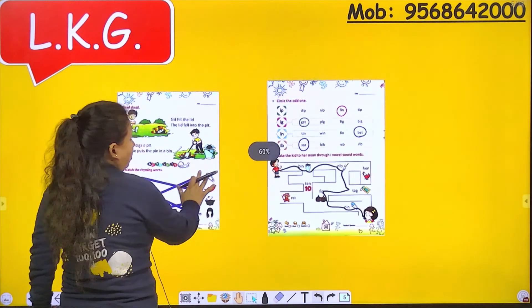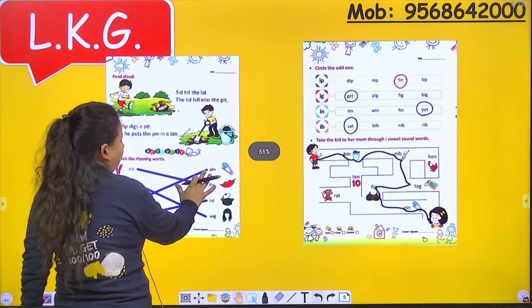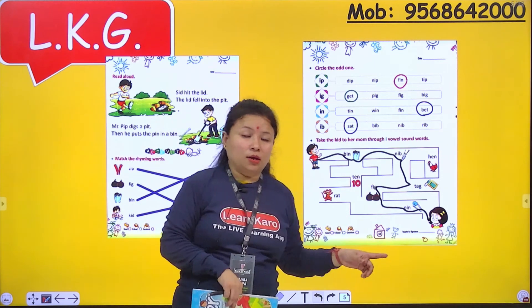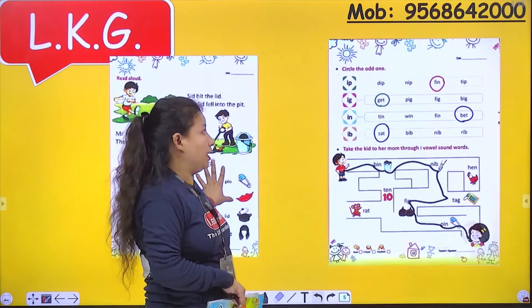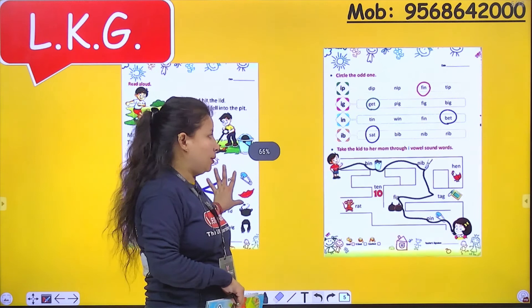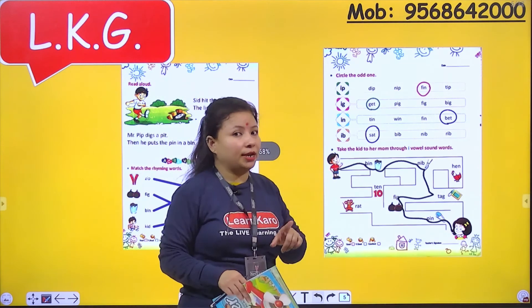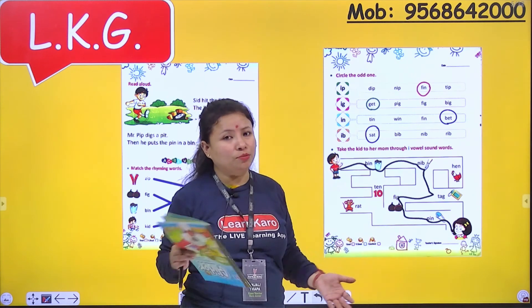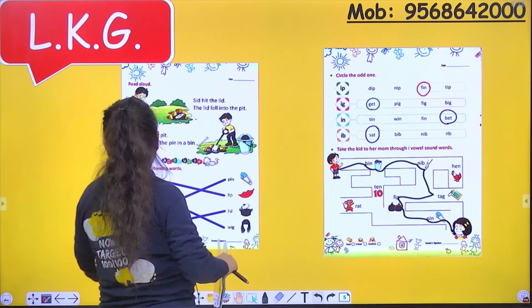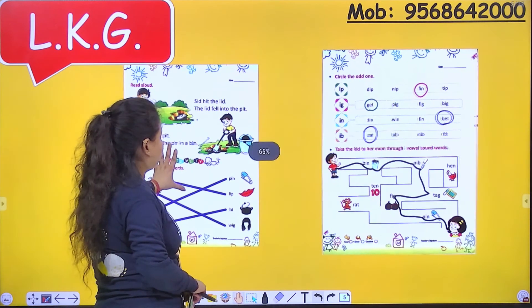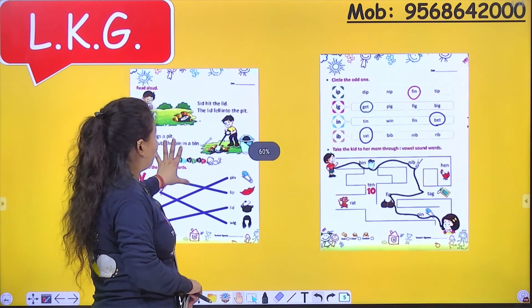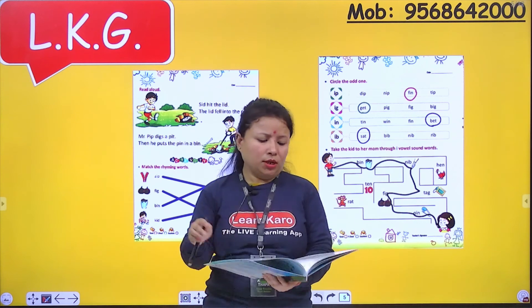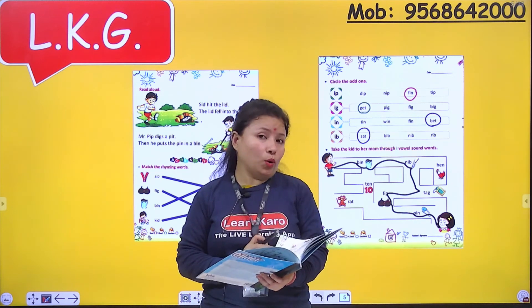So now I hope you have done this work. Agar nahi kiya hai, then you have to complete it. Sam will be sending you the assignment and you have to complete that assignment at your home. I sound words — today we have learnt I sound words. Next is O sound words.